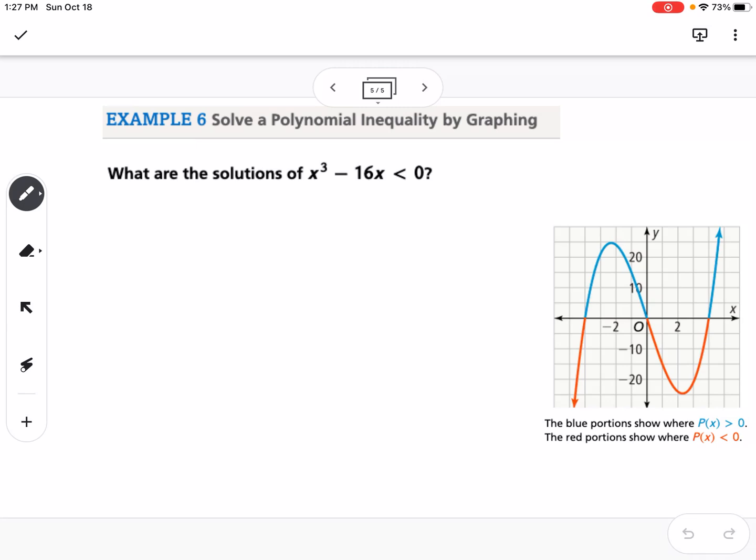And our last example for this is to solve the polynomial inequality by graphing. So we have the graph over here. I want to talk about how we can first start with the equation to find the zeros. So we have x cubed minus 16x, so I can factor out an x, which would be x squared minus 16. And then x squared minus 16 is a difference of squares, so this would be x times x plus 4 times x minus 4. So you can see this would be 0, negative 4, positive 4, our three zeros.